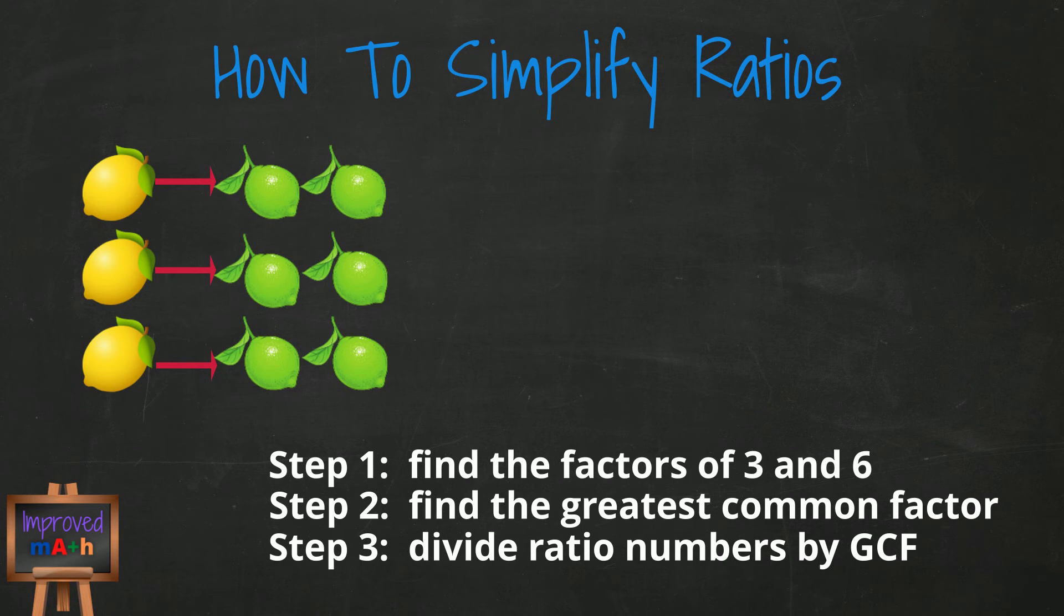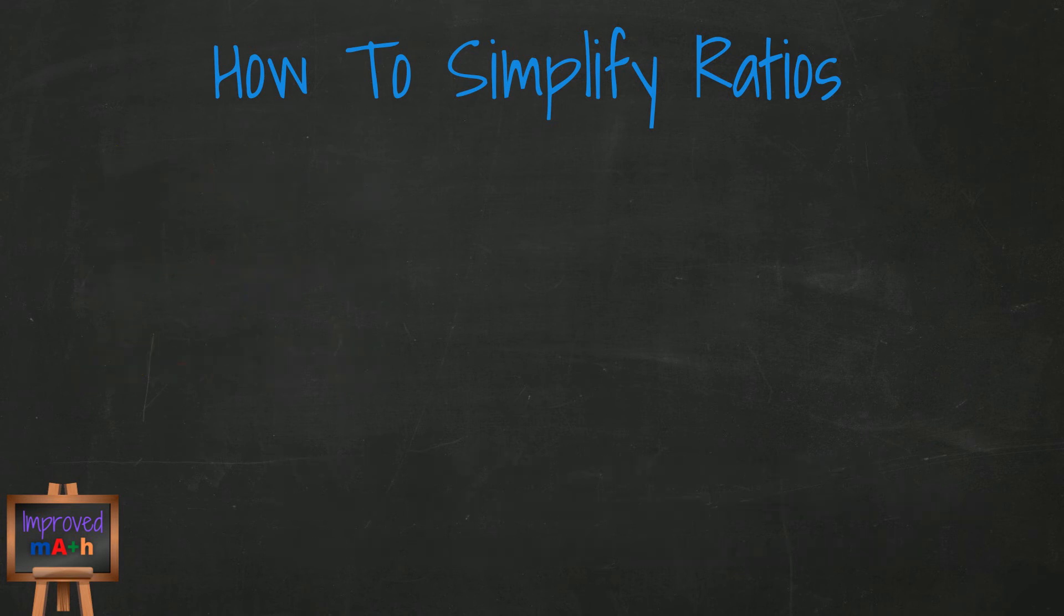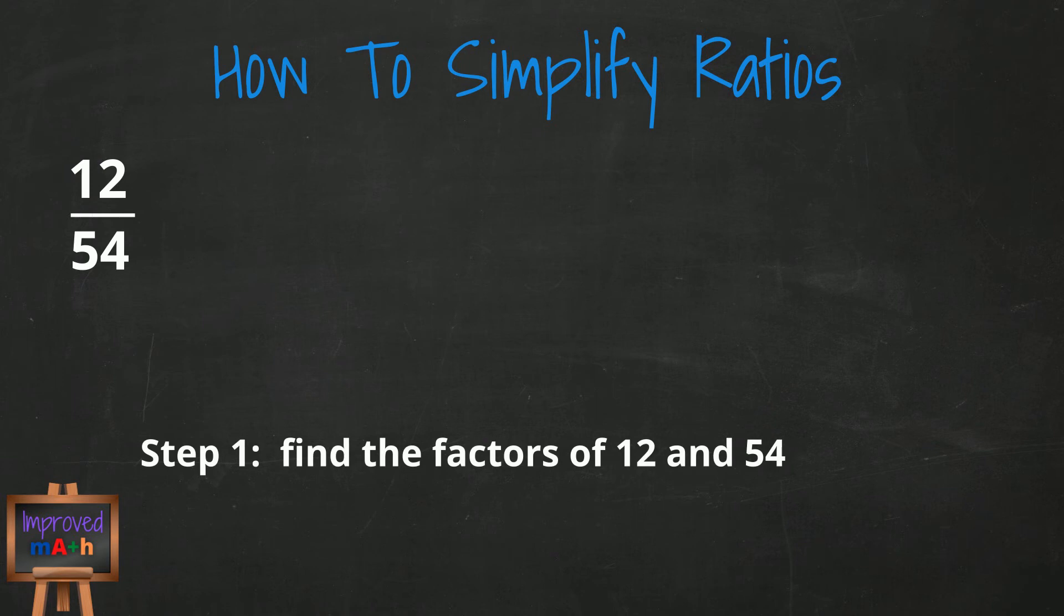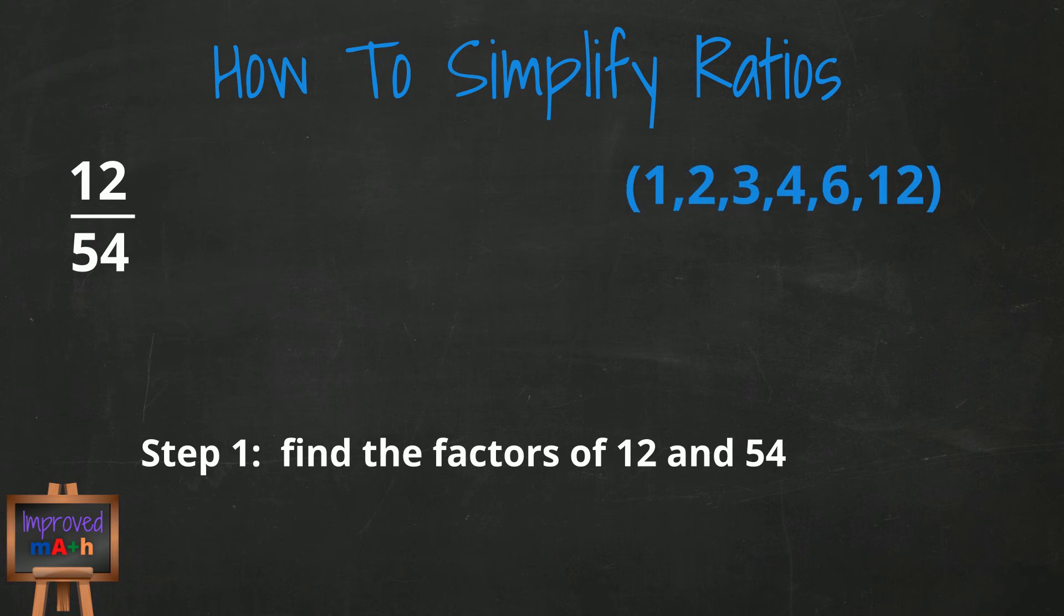Let's look at another example, but this time, let's make the numbers a little bigger. Step 1: Find the factors of both 12 and 54. The factors of 12 are 1, 2, 3, 4, 6, and 12.